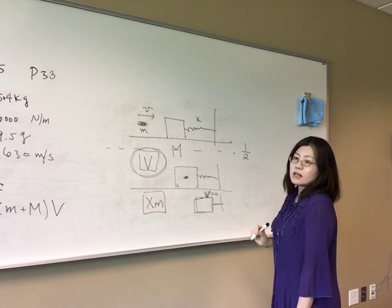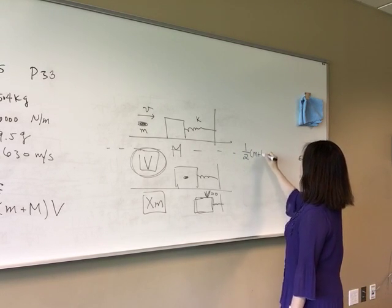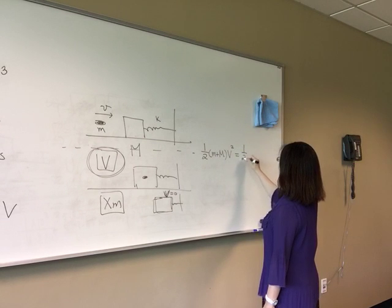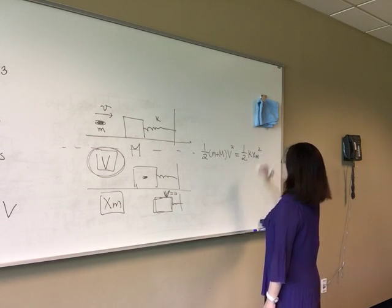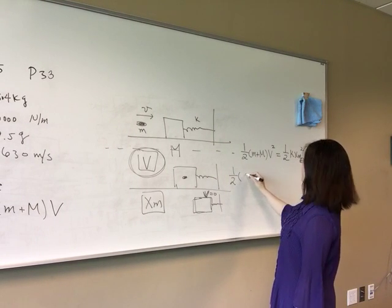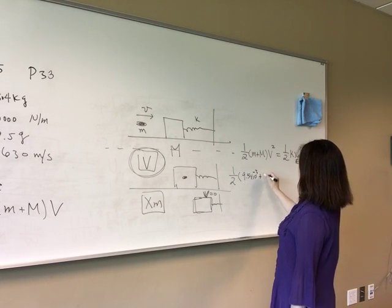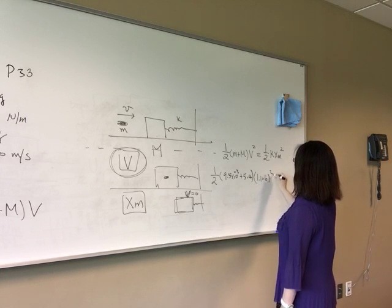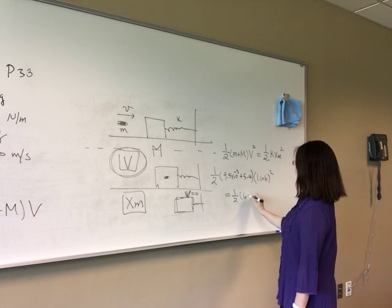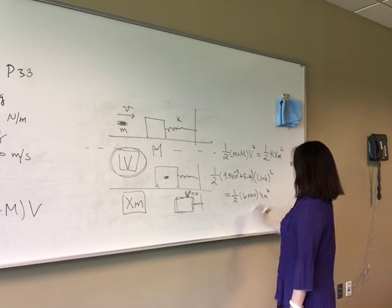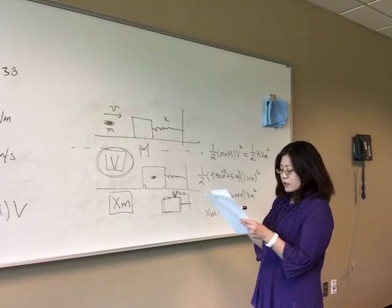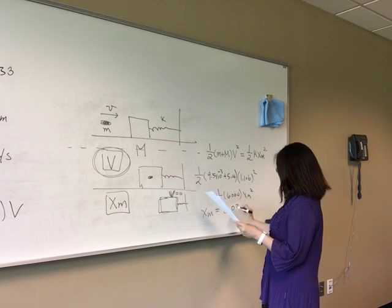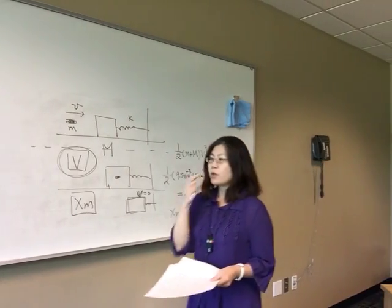Plugging in numbers: one-half times (9.5×10⁻³ + 5.4) times (1.106)² equals one-half times 6000 times xm squared. Solving, xm equals 0.0332 meters, which is about 3.32 centimeters.